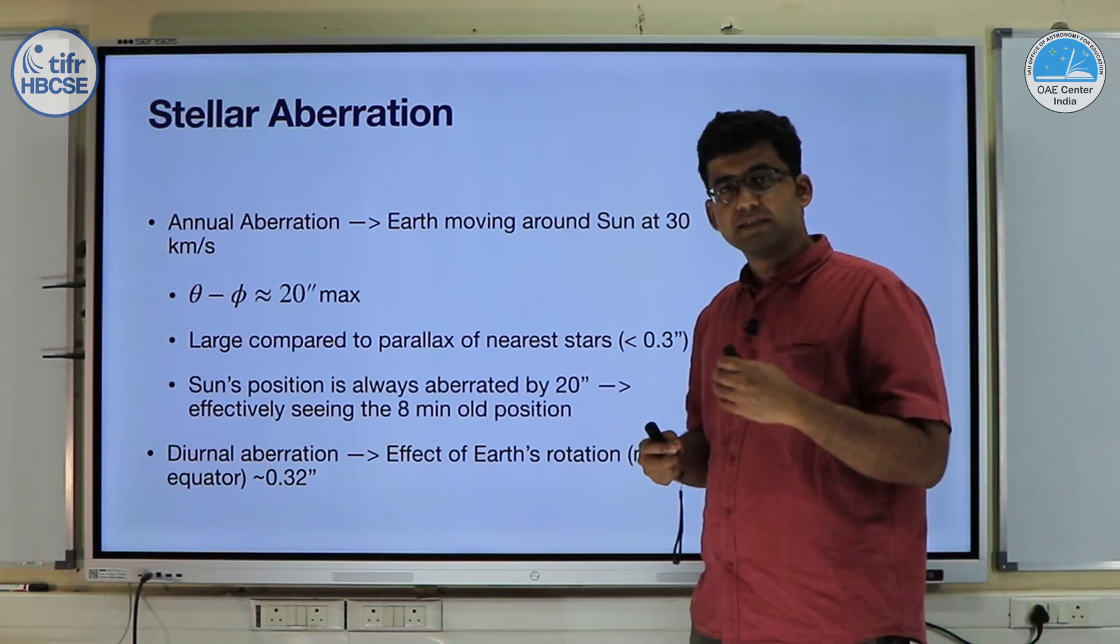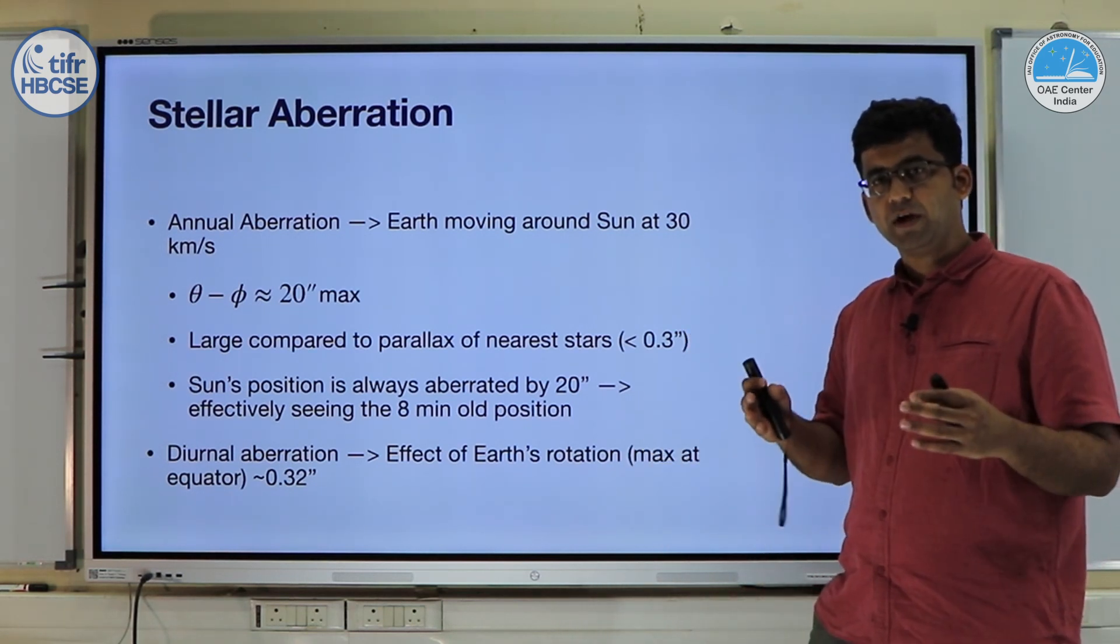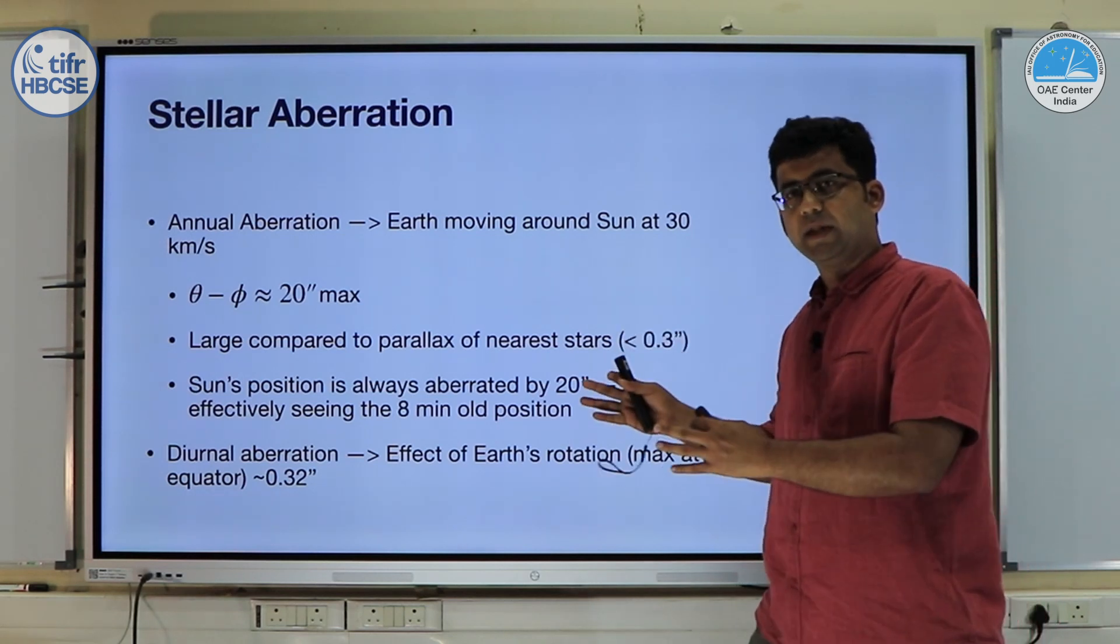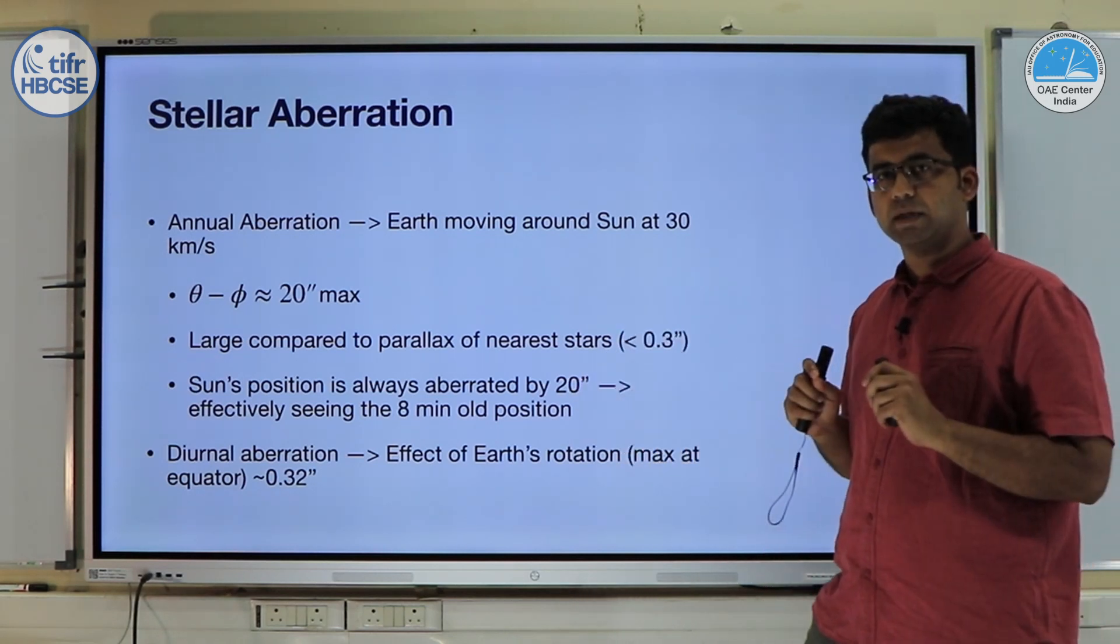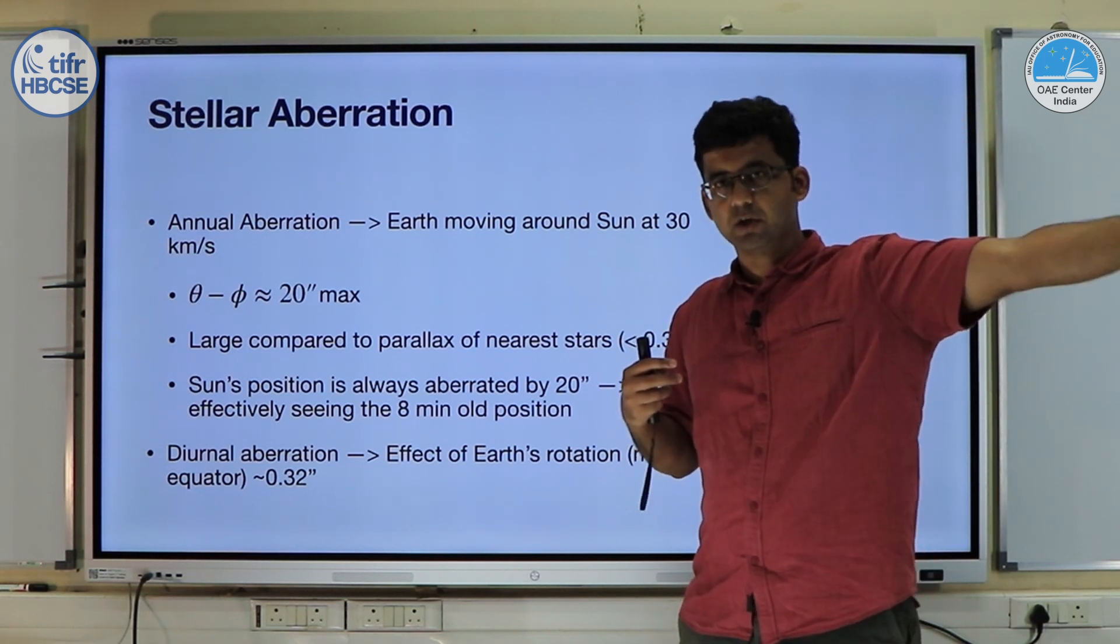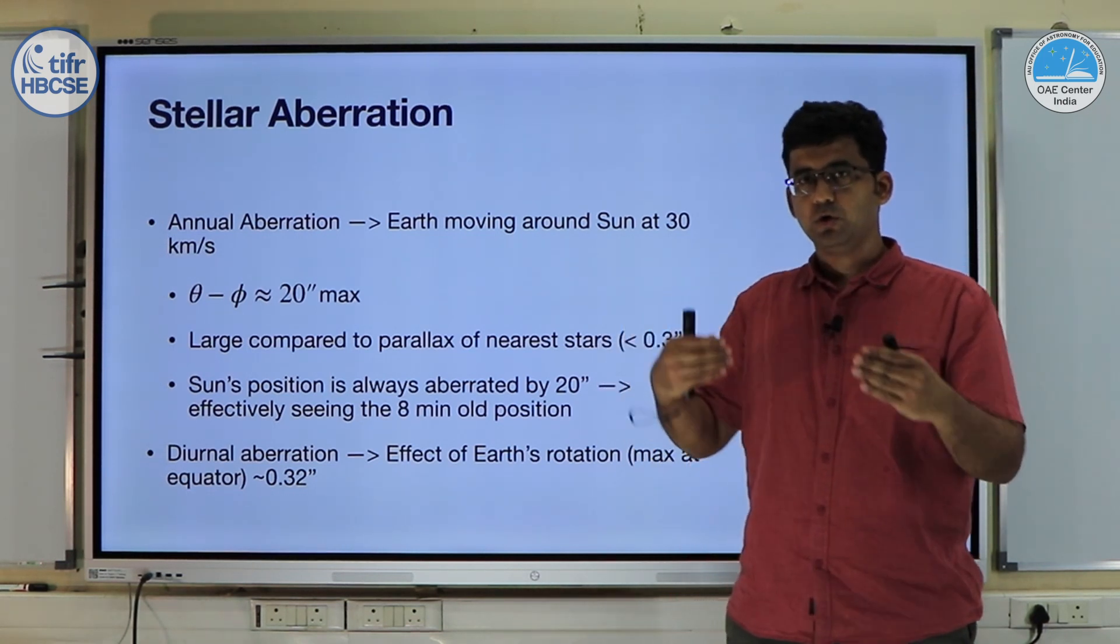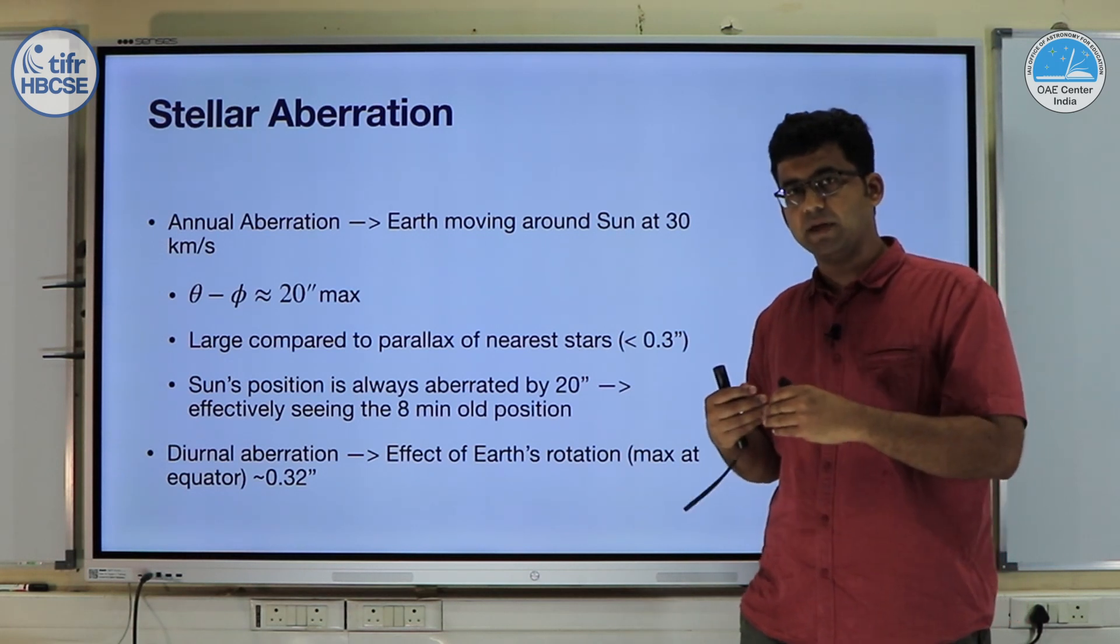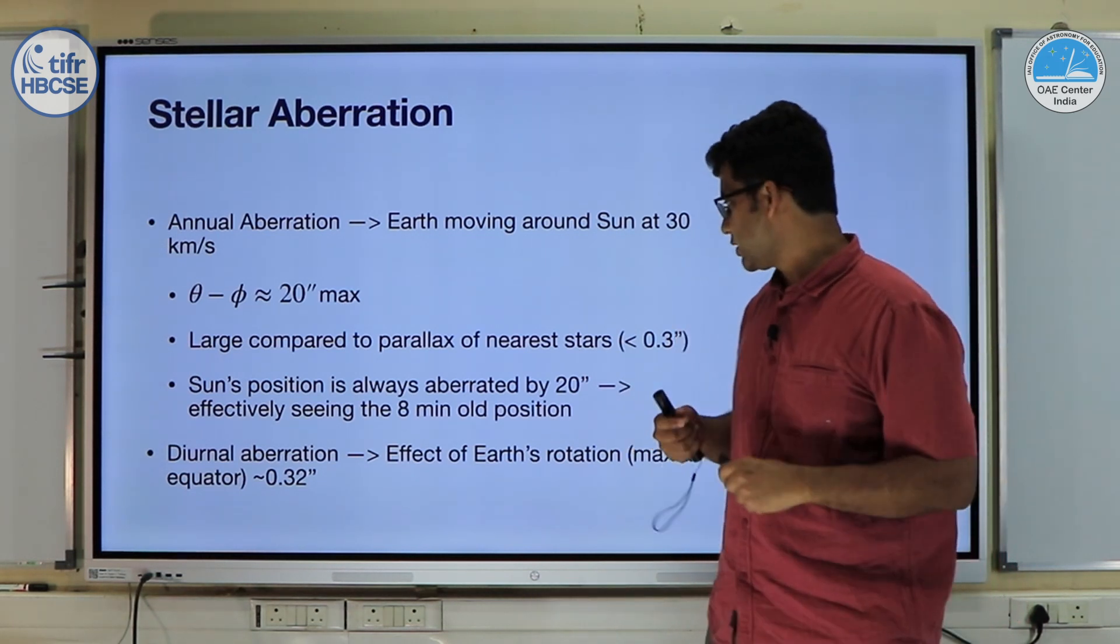Another interesting thing to note is that the sun's position is always effectively aberrated by 20 arc seconds. One way to look at this is that we always see the sun as it was 8 minutes ago. The light from the sun takes 8 minutes to reach the earth and we are seeing the sun as it was 8 minutes ago.